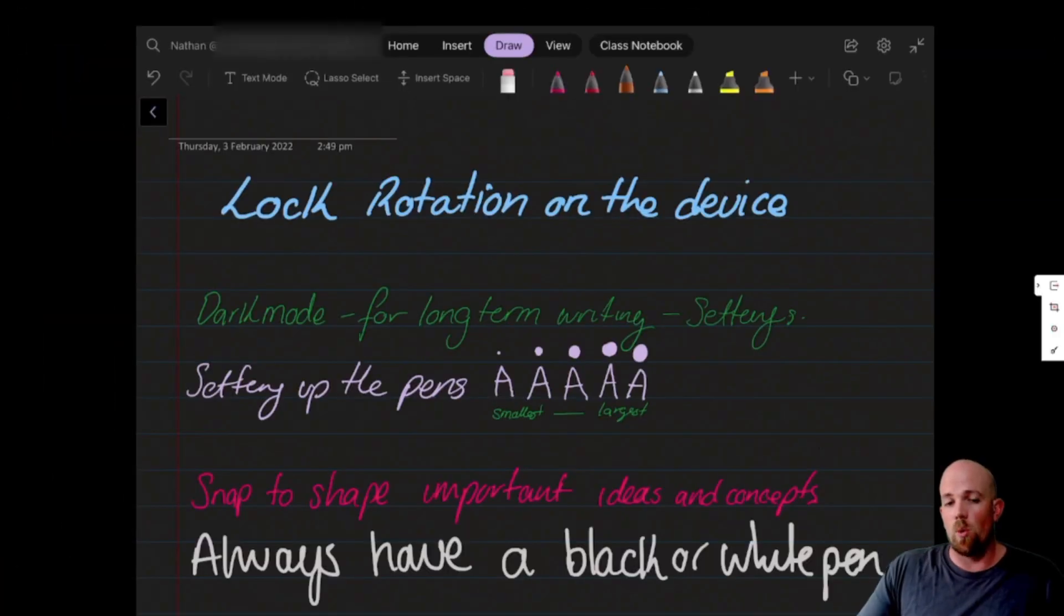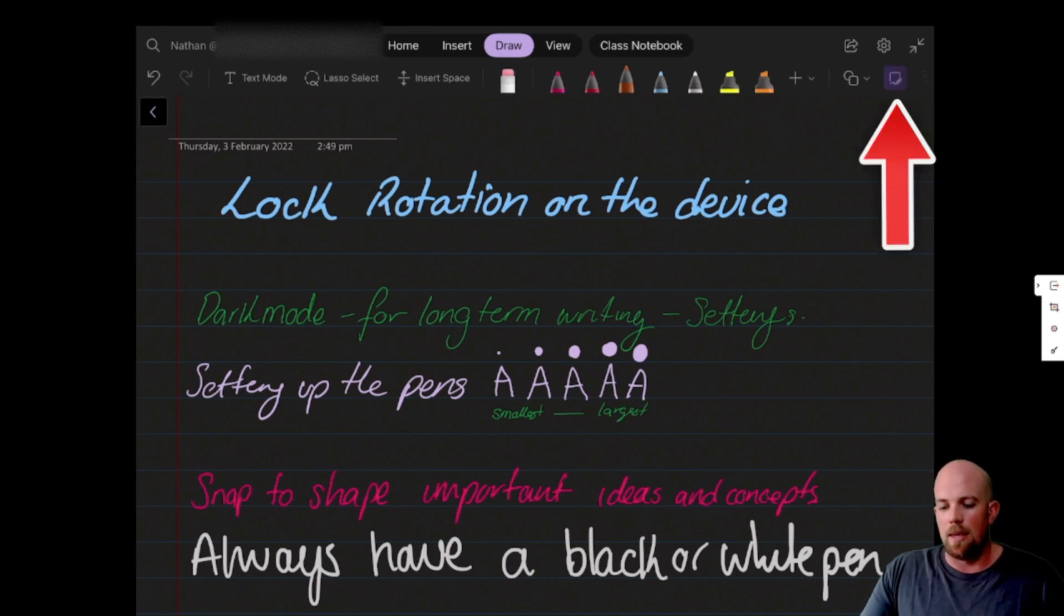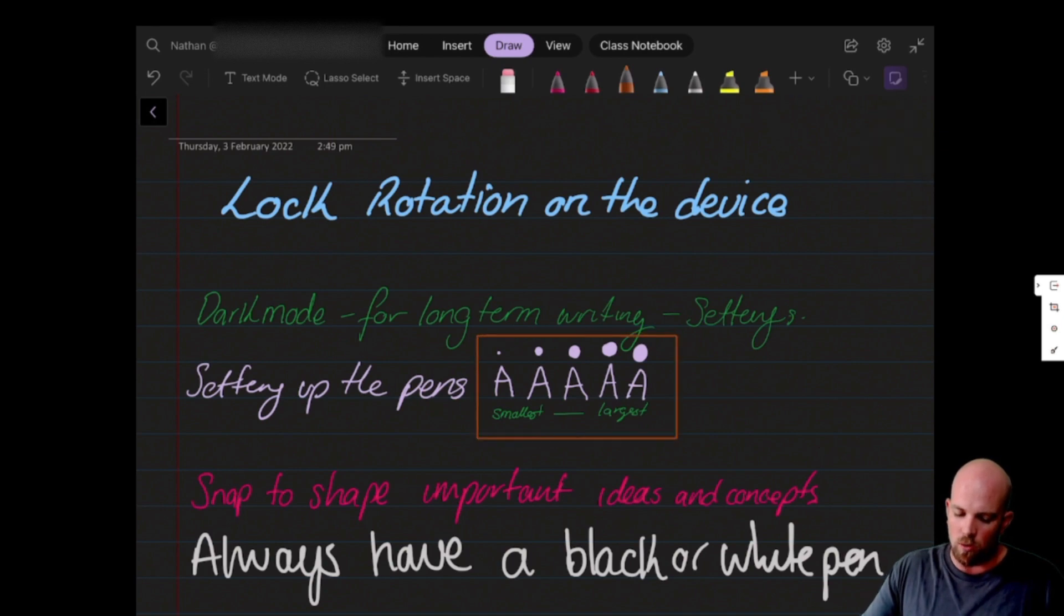My next tip would always be to teach them to use the snap to shape tool, especially in a digital note-taking place where we want to maybe highlight or bring to our attention important ideas. So maybe I've drawn something that resonates with me. Over in the top right-hand corner, we're going to select the snap to shape tool. And then I can quite freely just have a go at trying to draw a rectangle, but OneNote will make that nice and neat. Even if I want to come in and make a little star with triangles here, it makes it a little bit more interesting.